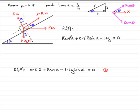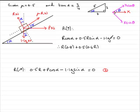Filling in with cos alpha and sin alpha as before: we have R times cos alpha — cos alpha was 4/5 or 0.8 — so R times 0.8. Then 0.5 times sin alpha; sine of alpha is 3/5, which is 0.6. So we get plus 0.5 times 0.6R, minus 1.1g equals zero. That gives us 0.8R and 0.5 of 0.6R — that's 0.3R. So we have 1.1R.